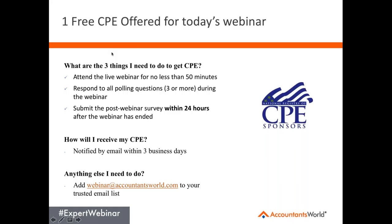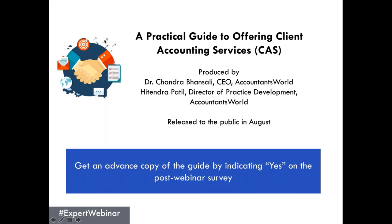We do offer one free CPE for today's webinar. Three things you need to do to get CPE: attend the live webinar for no less than 15 minutes; respond to all four of the polling questions — there will be four today so you have to respond to all four to get credit; and complete the post-webinar survey when you close out the GoToWebinar window. If you don't see it or forgot to fill it out, we'll email you a link. You will be notified by email that you've received your CPE. Make sure to add webinar@accountantsworld.com to your trusted email list.